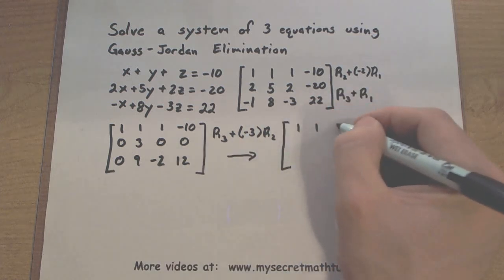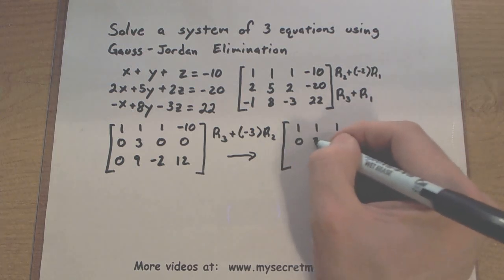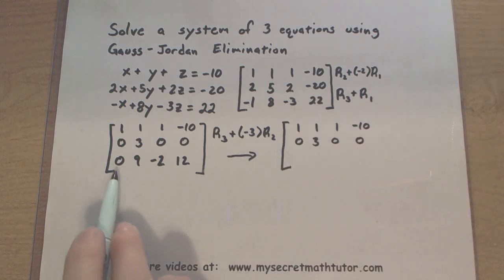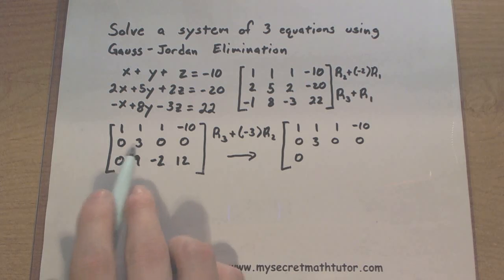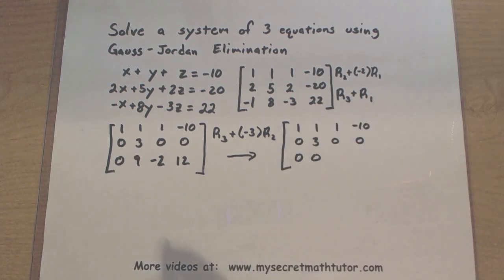So we're not changing row 1, we'll write that in. And we're not changing row 2. But we are taking this last row here, that's the one we're changing. So row 3 plus negative 3 times 0, 0. 9 plus a negative 3 times 3, so that's 9 minus 9, there's that 0.